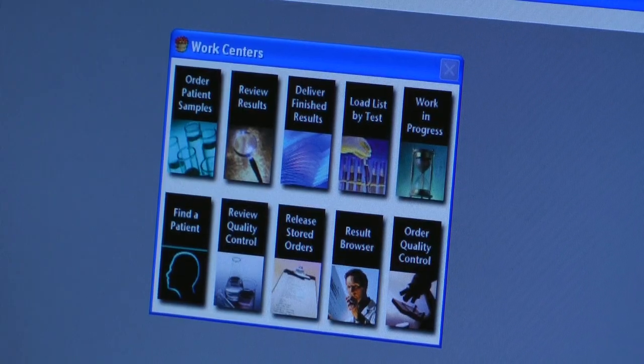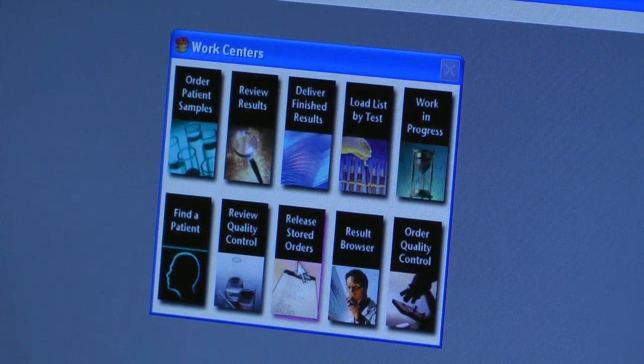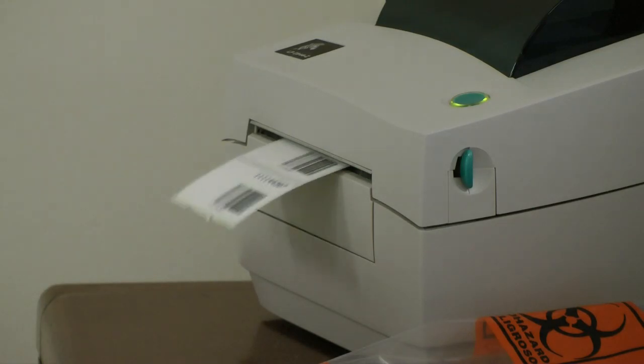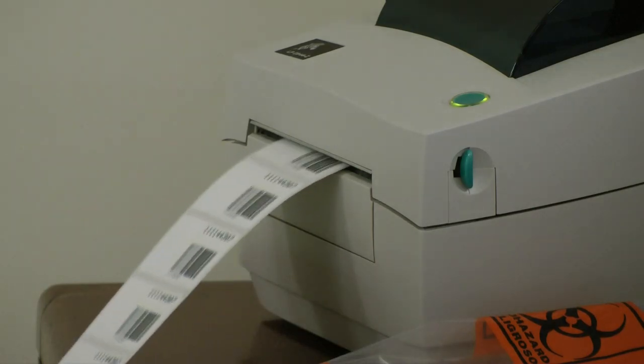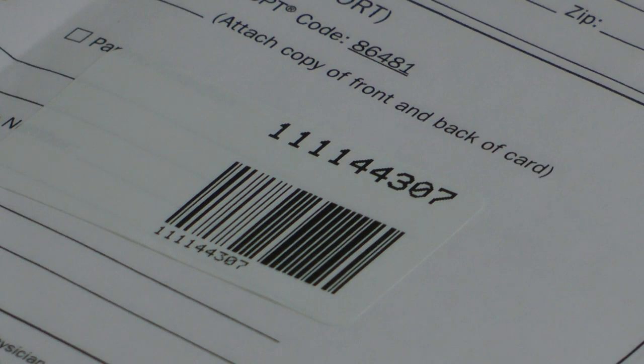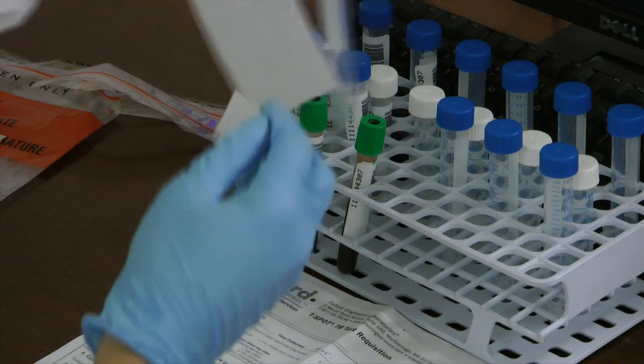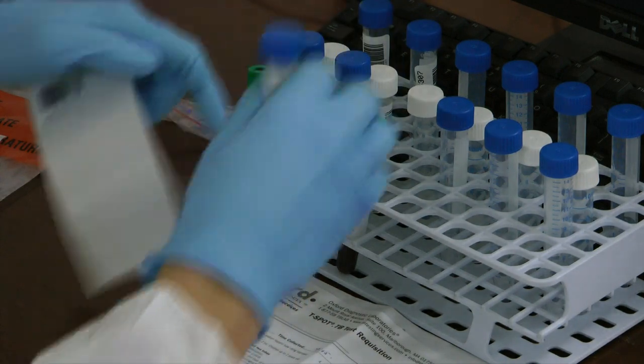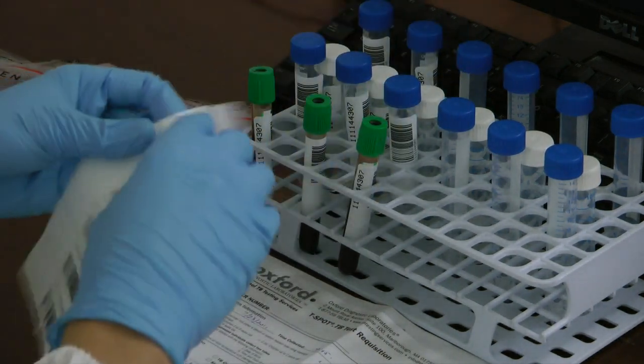A T-Spot TB test is ordered in the laboratory information system and an accession number barcode is generated. Barcodes make recognition of each test sample simple in the automation instruments. The technician labels centrifuge tubes and a Leukacept tube which are used for the pre-analytical steps.